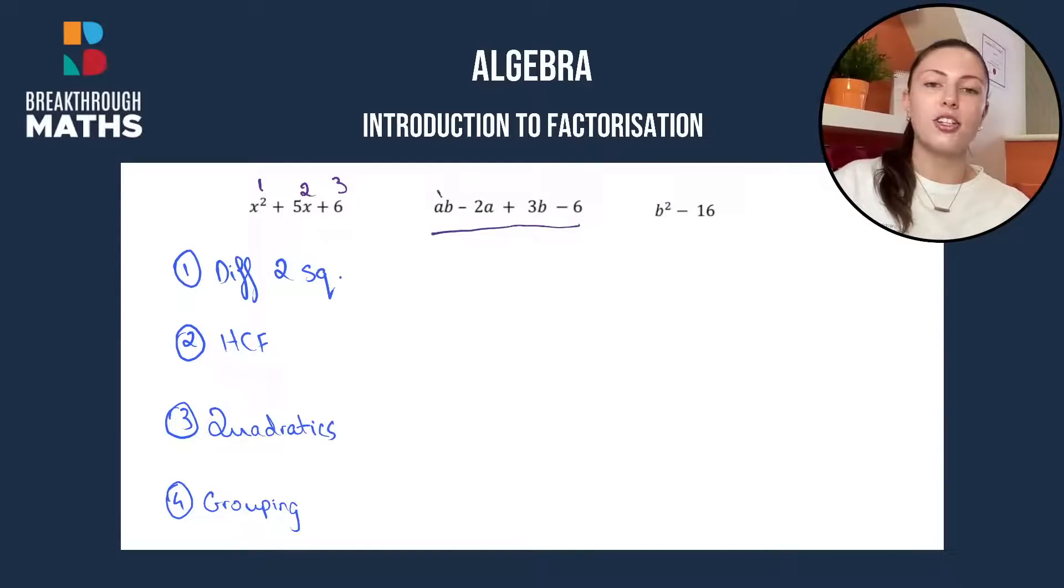For our next type of factorization we have four terms. We had a minus which moved us on to 2a. We had a plus which moves us on to 3b and a minus which moves us on to our final term of 6.